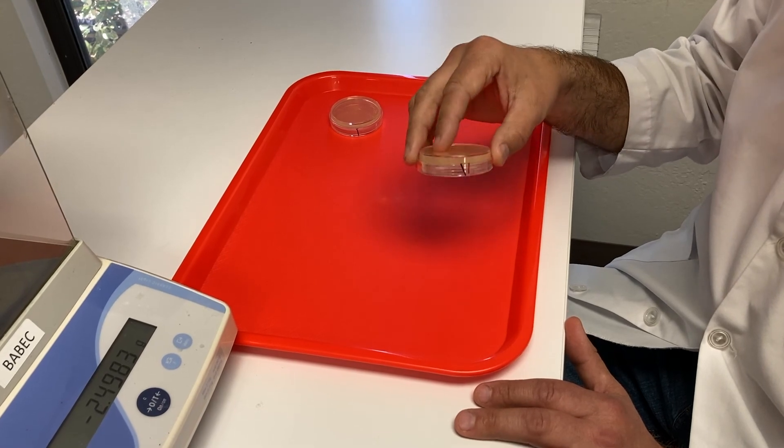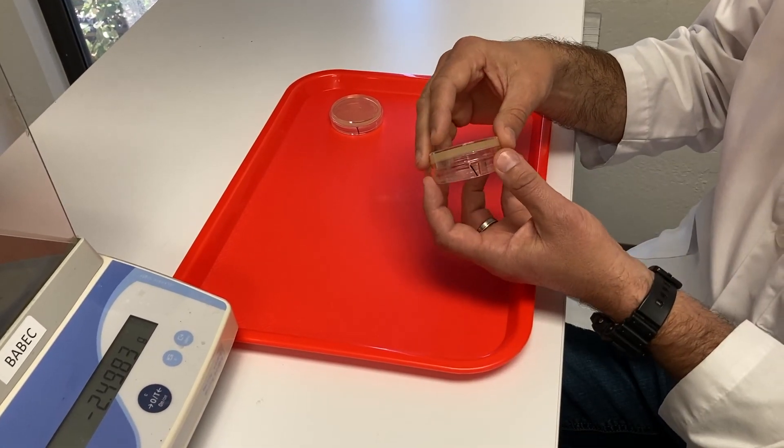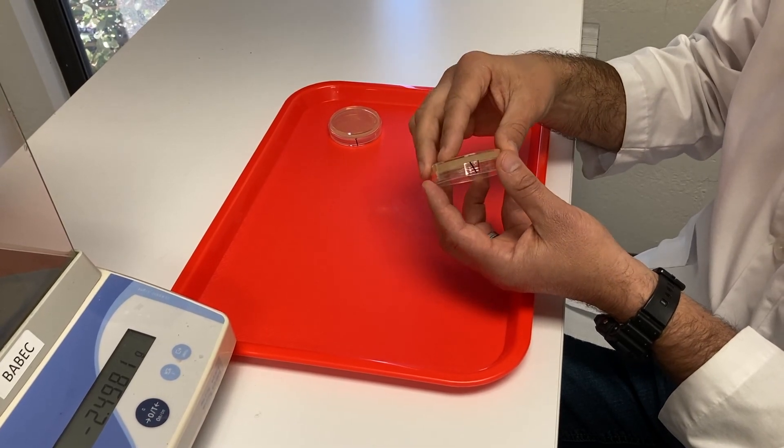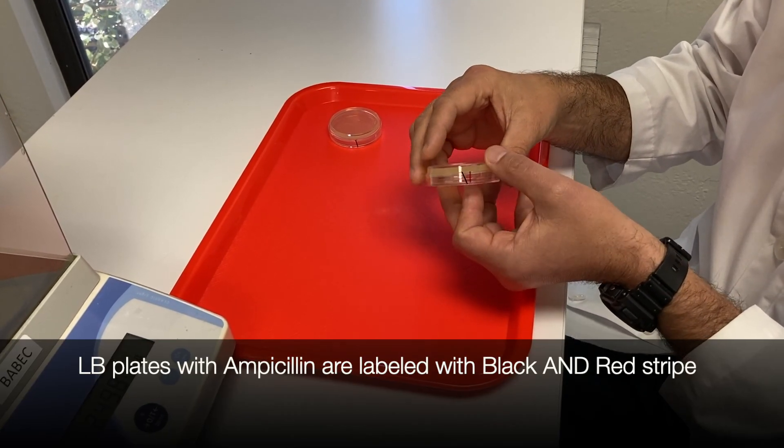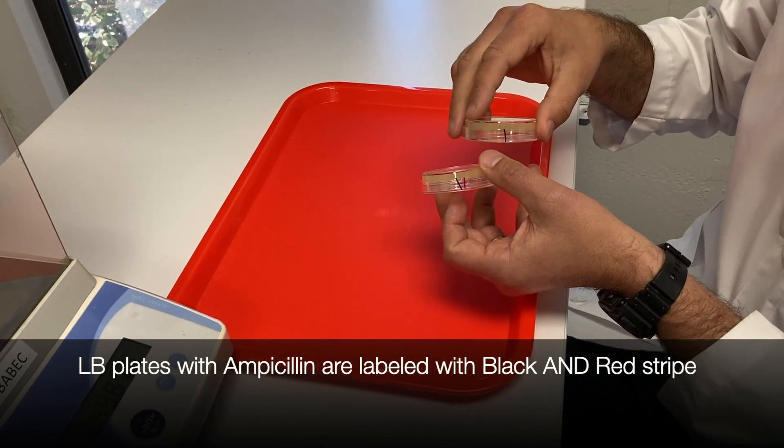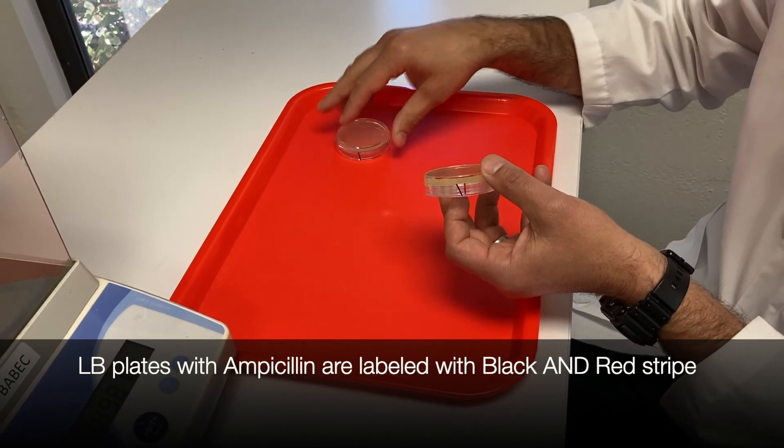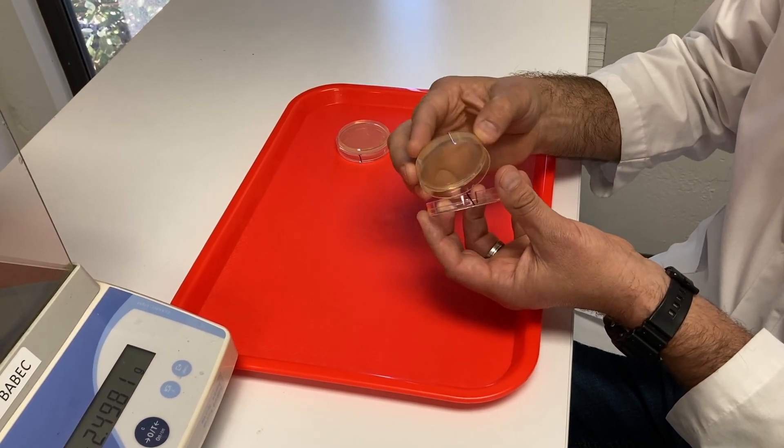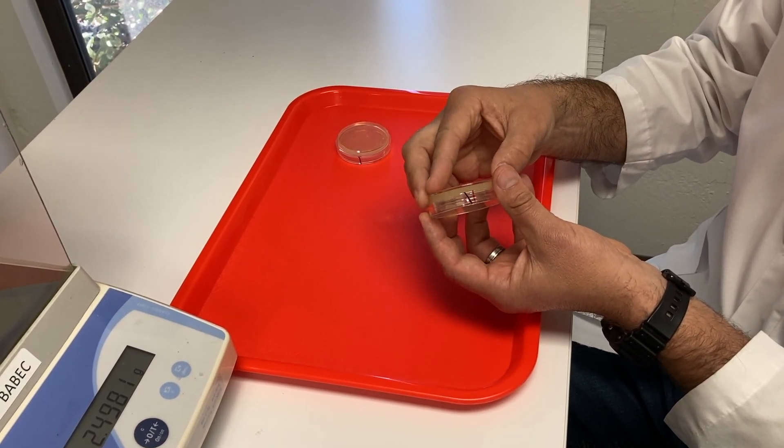Once the LB agar has cooled, it is solid in the dish. There is now a surface for the bacteria to grow. Remember, these plates also contain the antibiotic ampicillin. Therefore, only bacteria that are resistant to ampicillin will be able to grow. The ampicillin will kill all other bacteria.